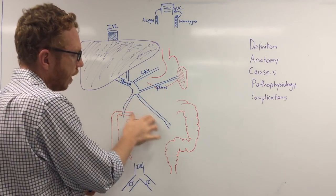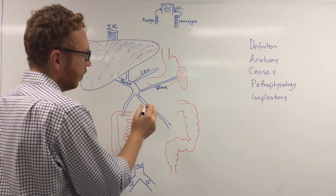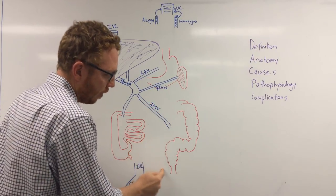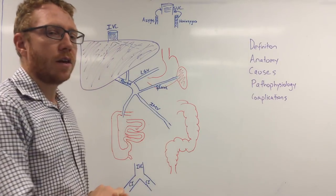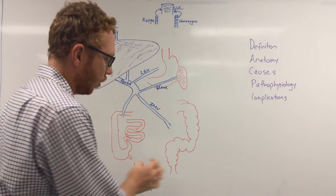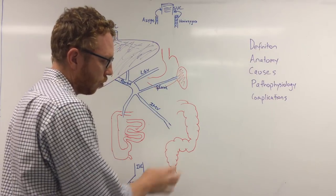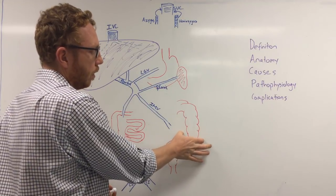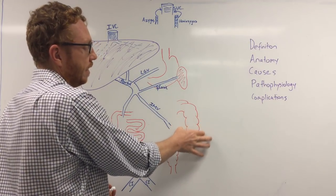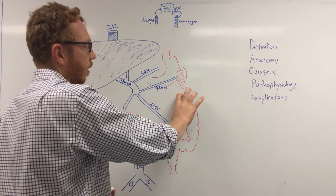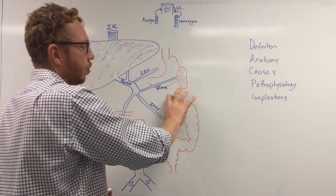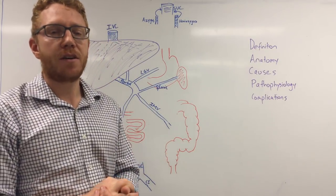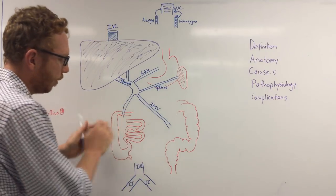Moving down, we have the inferior mesenteric vein. This drains coming right down towards the end of the alimentary canal, draining the proximal two-thirds of the rectum and rectal canal, moving into the sigmoid colon, up through the descending colon, the splenic flexure, and part of the transverse colon.